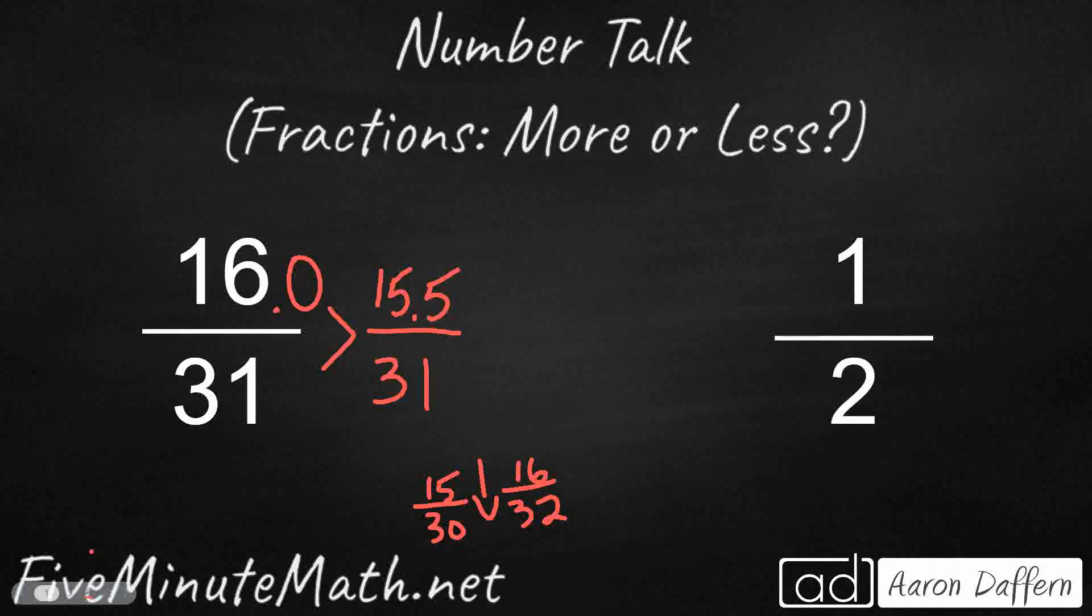So, by using those two strategies, I can say with confidence that 16 over 31 is greater than one half.